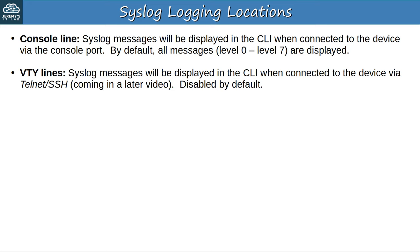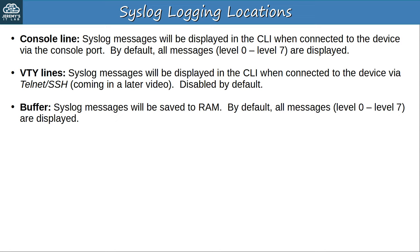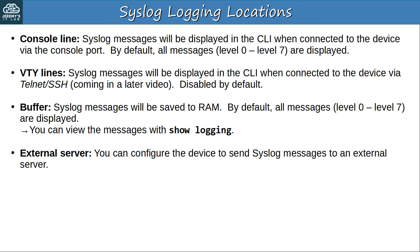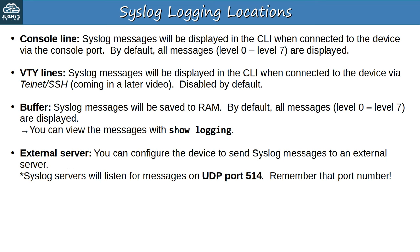So if you shut down an interface while connected via telnet or SSH, no message will be displayed by default. The next location is the buffer of the device — syslog messages will be saved to RAM. By default, all messages from level 0 to level 7 will be saved to the buffer. You can view the messages in the buffer with the SHOW LOGGING command. You can also configure the device to send syslog messages to an external server — this is very useful especially in large networks. Syslog servers listen for syslog messages on UDP port 514, so the destination port will be UDP 514.